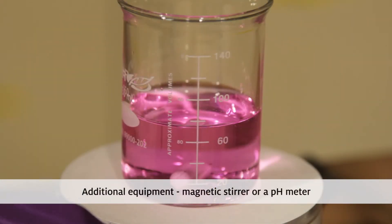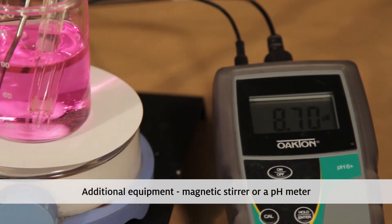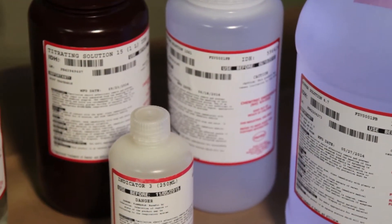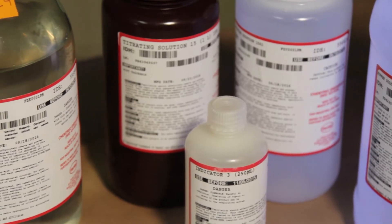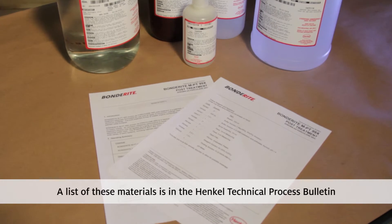Some additional equipment, such as a magnetic stirrer or a pH meter, can make your testing simpler and easier to do. Test solutions for the product you are using are also required. A list of these materials is on the last page of the Henkel technical process bulletin.